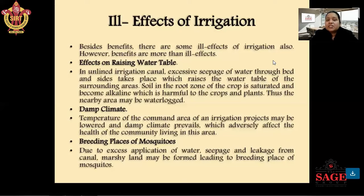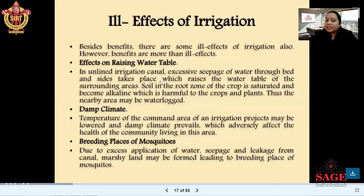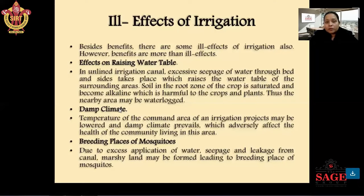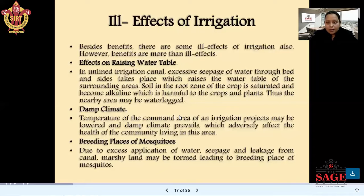In unlined irrigation canals, excessive seepage of water takes place, which raises the water table of the surrounding area. The soil in the root zone of the crop becomes saturated and alkaline, which is harmful to crops and plants. The nearby area may become waterlogged, and waterlogging is a major problem as it blocks water movement through the soil.